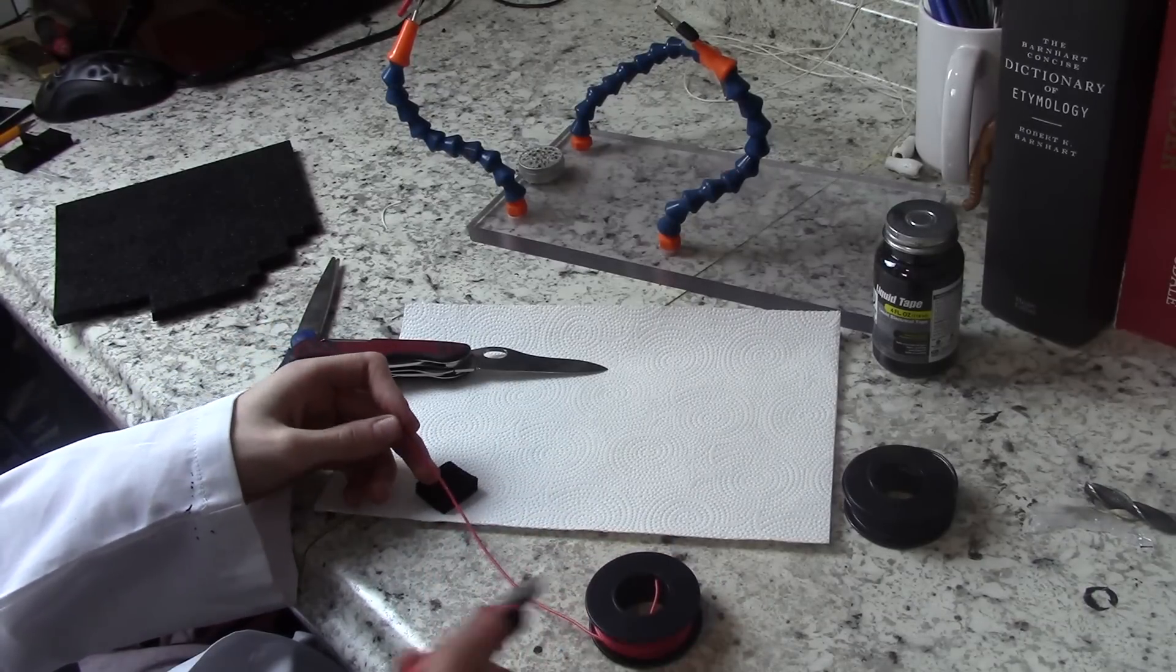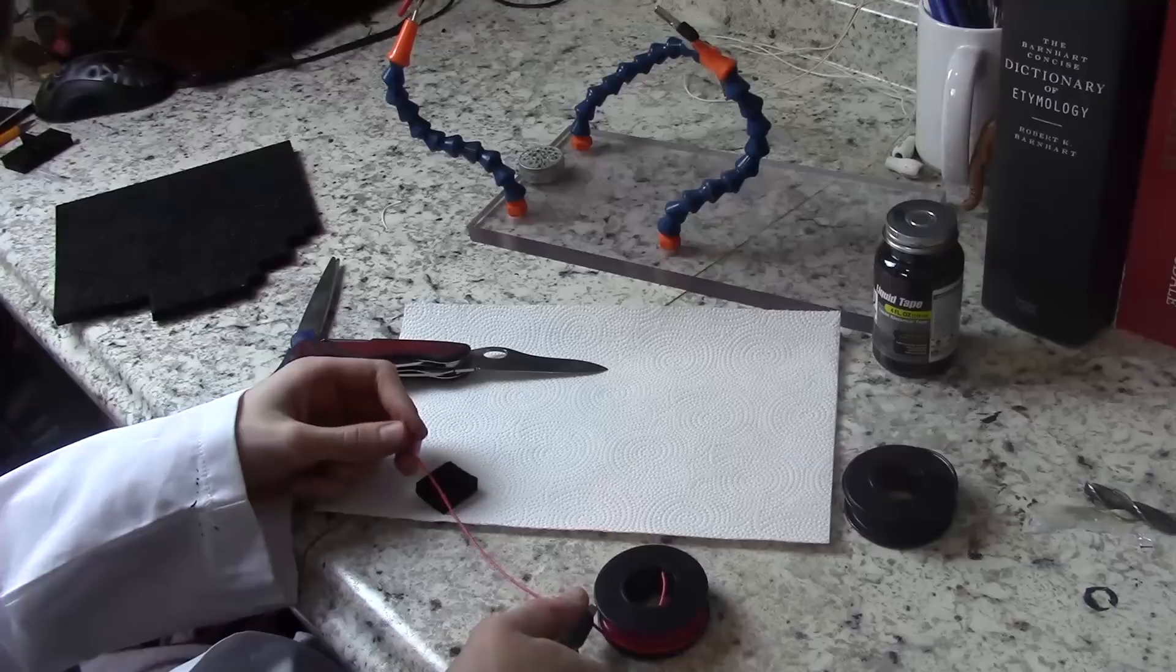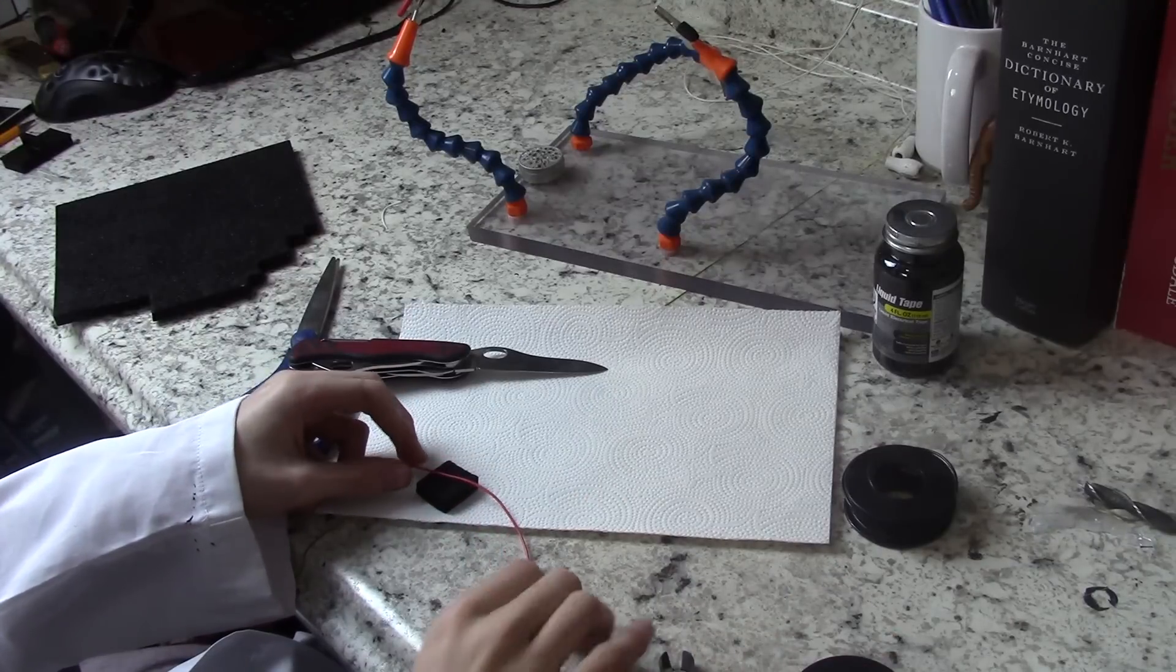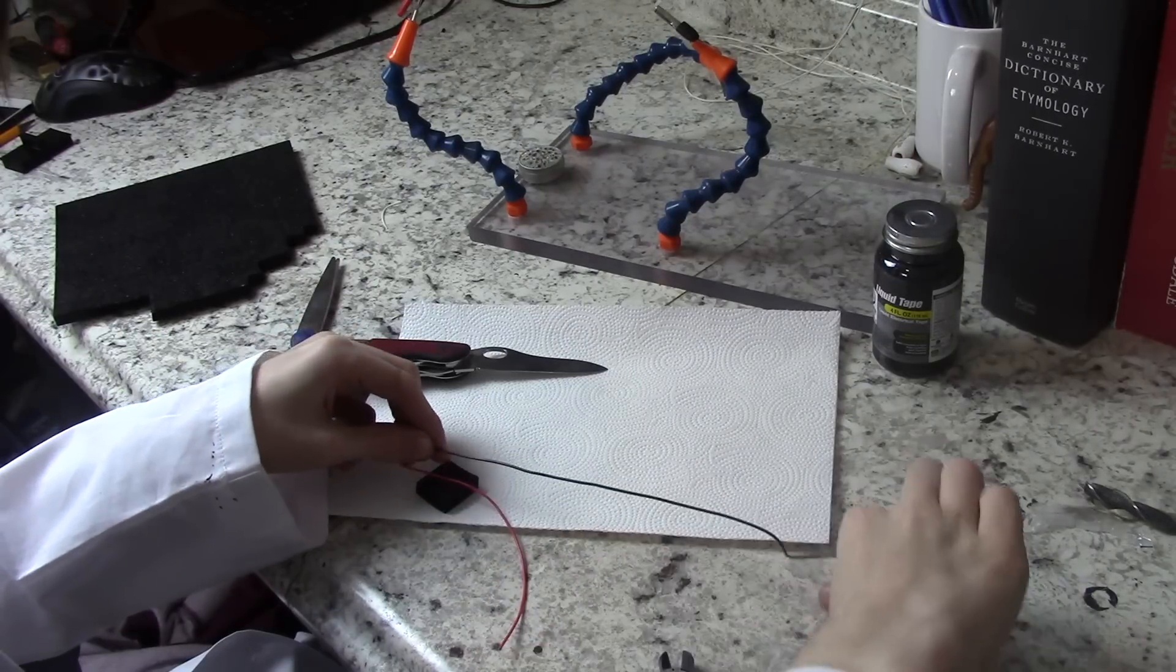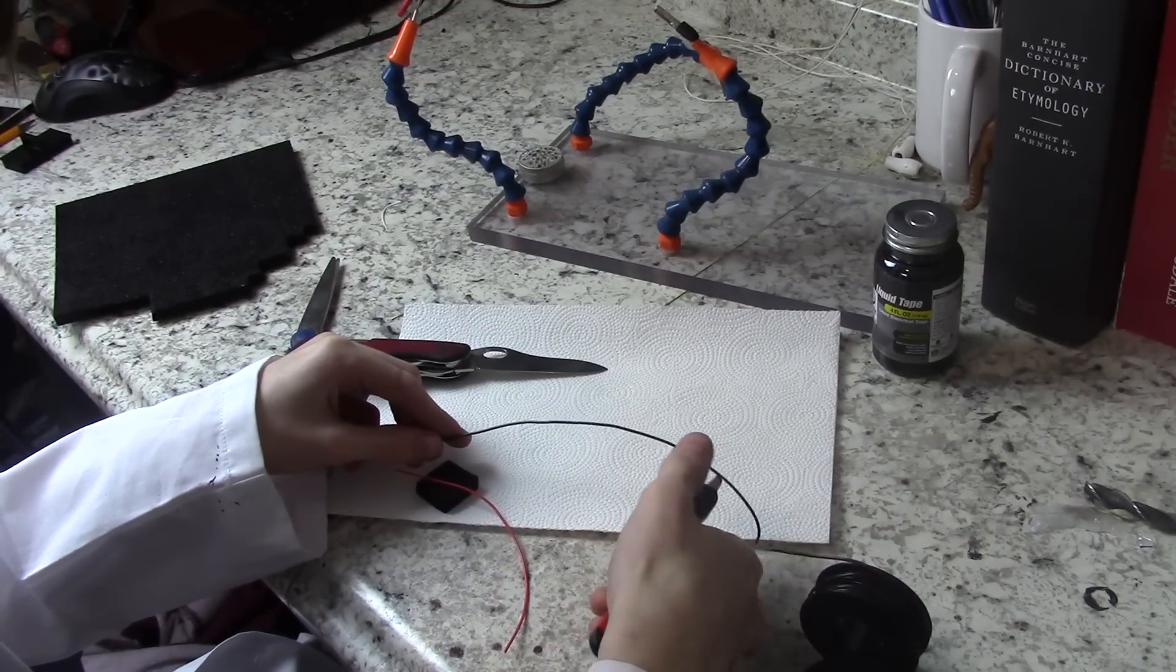Now cut two wires for the positive and negative charge. They can be as long as you want, but I'm going to make them fairly short because this sensor isn't for any specific project.